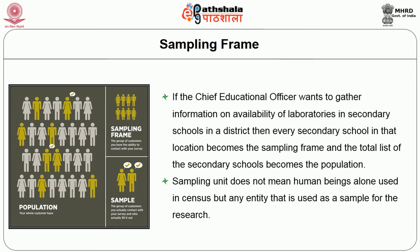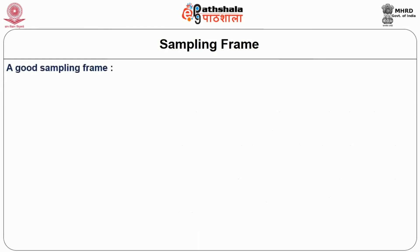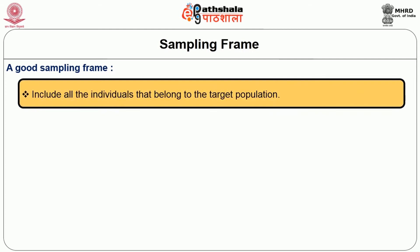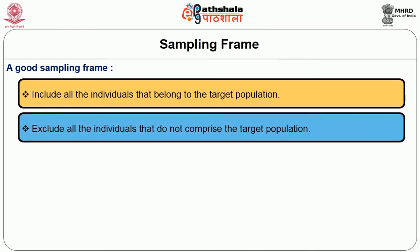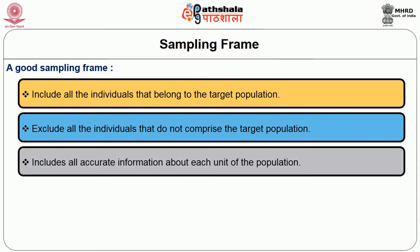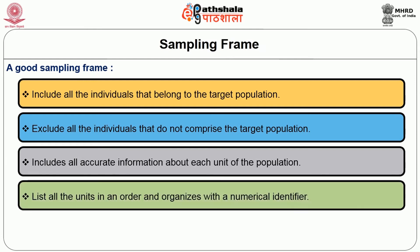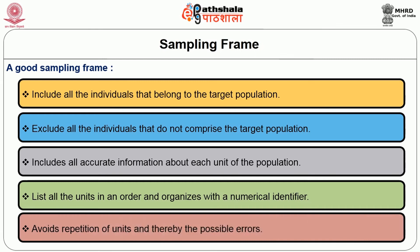The sampling unit does not mean human beings alone; it can be any entity used as a sample. A good sampling frame will include all individuals that belong to the target population, exclude all individuals that do not comprise the target population, include accurate information about each unit, list all units in order with a numerical identifier, and avoid repetition of units to prevent possible errors.